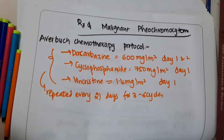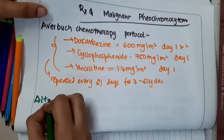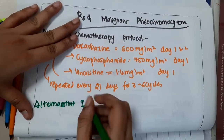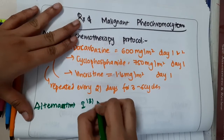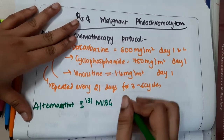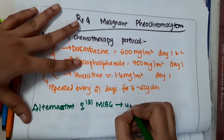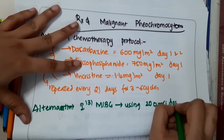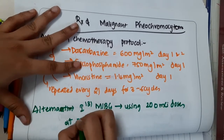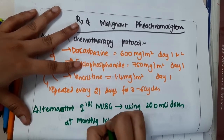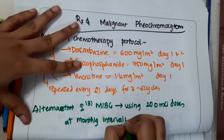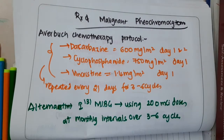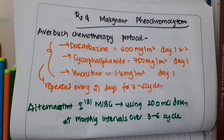The alternative to this chemotherapy for malignant pheochromocytoma is iodine-131 MIBG, which is used for treatment. A 200 mCi dose is given at monthly intervals over 3 to 6 cycles. This is about the treatment of malignant pheochromocytoma. Thank you for watching.